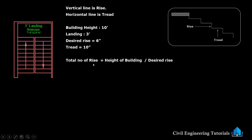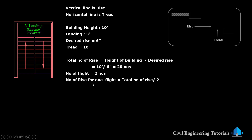First, total number of rises we have to calculate: that is height of building divided by desired rise. Height of building is 10 feet and desired rise is 6 inch. So 10 feet divided by 6 inch — we are getting 20 numbers as the total number of rises. We have 2 numbers of flights. You can see this side and this side — 2 numbers of flights. Number of rises for 1 flight: total number of rises 20 divided by 2 equals 10 numbers.